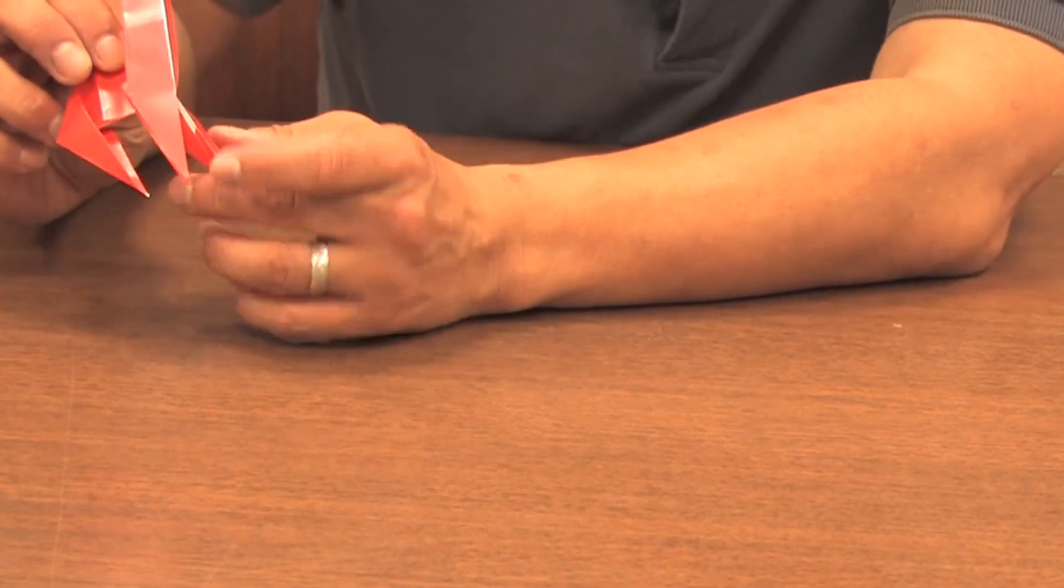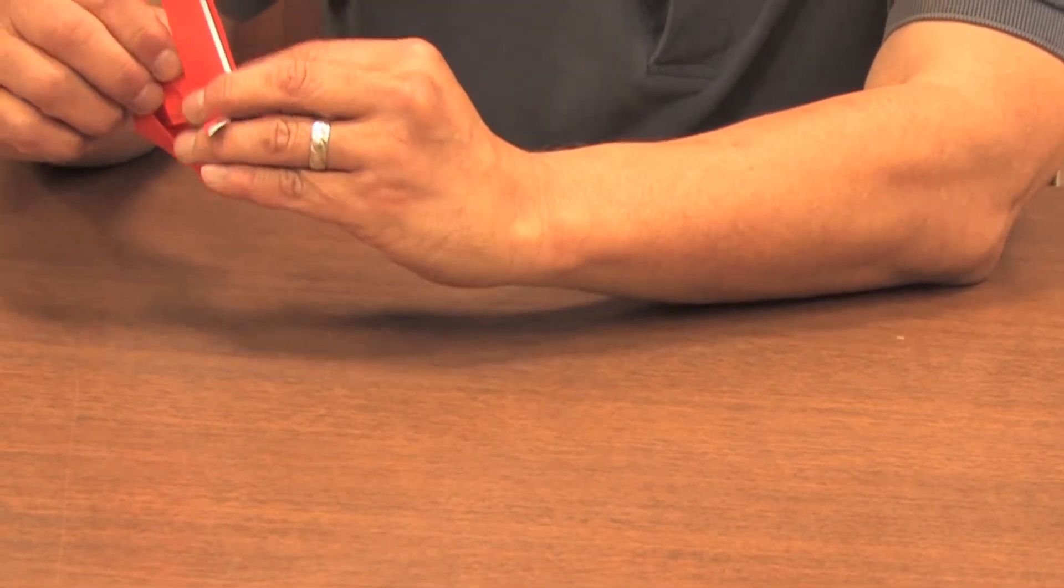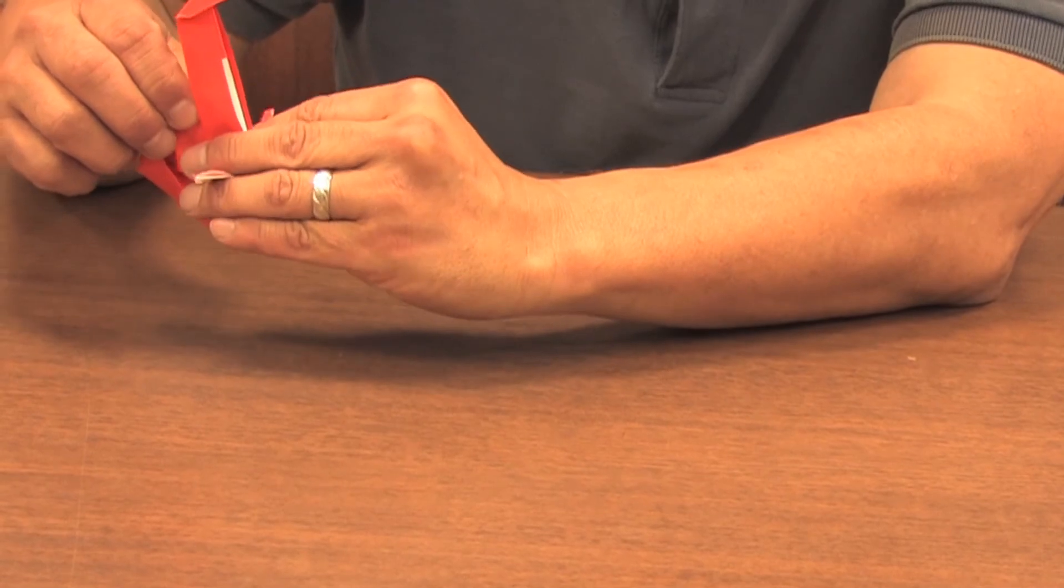And to make him stand up, you're going to have to open up his two front legs a little bit. And so this is Alvin with Origami by Aki. And that's how you make an Origami Giraffe.